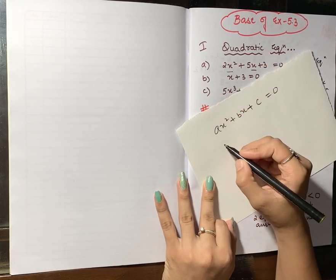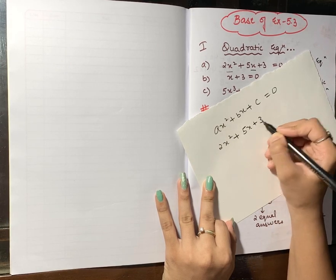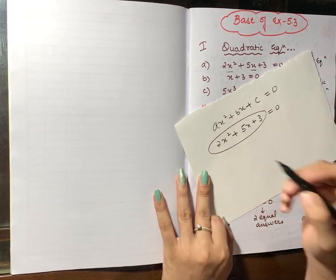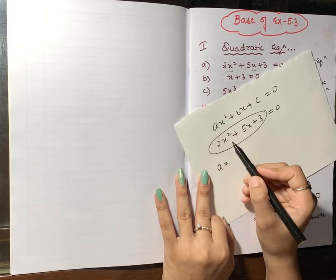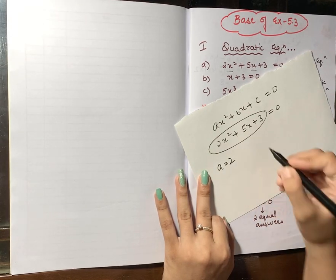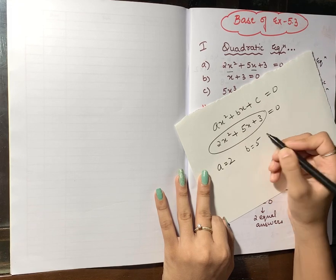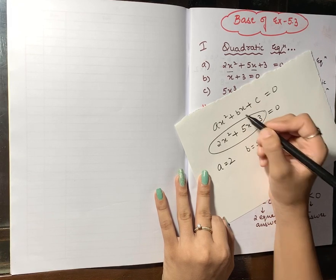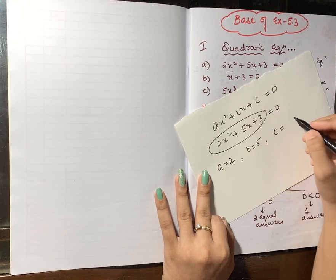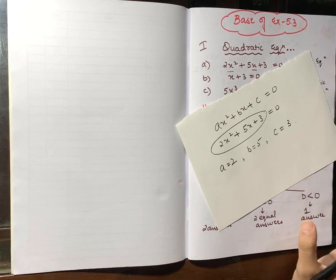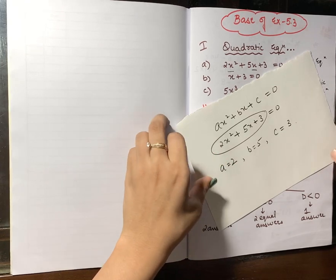Now let me apply this to the example 2x² + 5x + 3 = 0. In this equation, a is the coefficient of x², which is 2. b is the coefficient of x, which is 5. And c is the constant, which is 3. So in every exercise we solve, you need to know the values of a, b, and c.